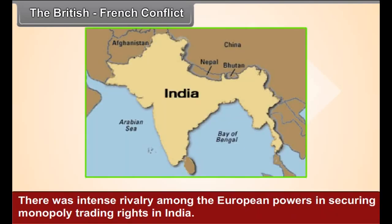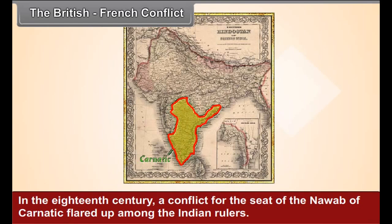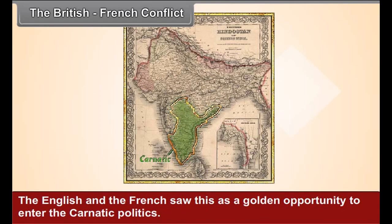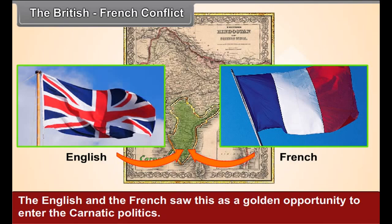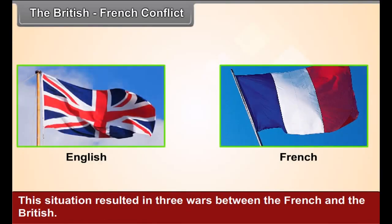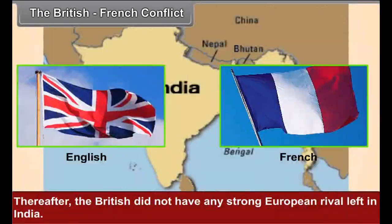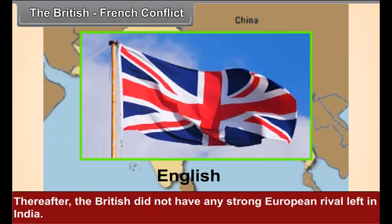The European traders exploited this situation to their own advantage. British-French Conflict: There was intense rivalry among the European powers in securing monopoly trading rights in India. In the 18th century, a conflict for the seat of the Nawab of Karnatak flared up among the Indian rulers. The English and the French saw this as a golden opportunity to enter Karnatak politics. The French offered military assistance to one of the aspirants, while the British sided with his opponent. This resulted in three Karnatak Wars, which the British ultimately won, leaving them without any strong European rival in India.